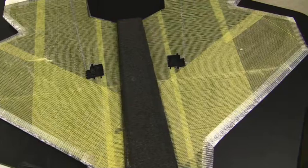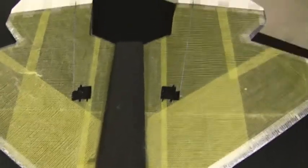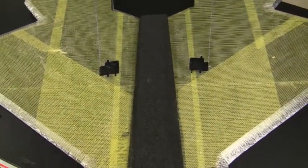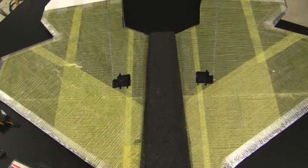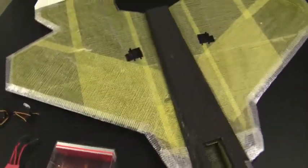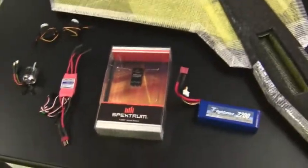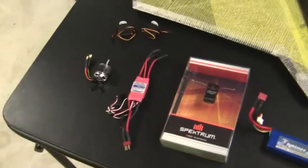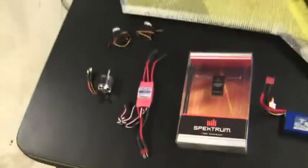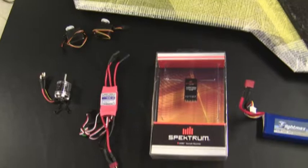We're back here with the EPP Parkjet. In the last video we left off after I cut out and test fit the servos. So in this video we're going to start installing all the electronics and test fit all the pieces to make sure of where they're going to fit in the plane and how everything's going to be installed.